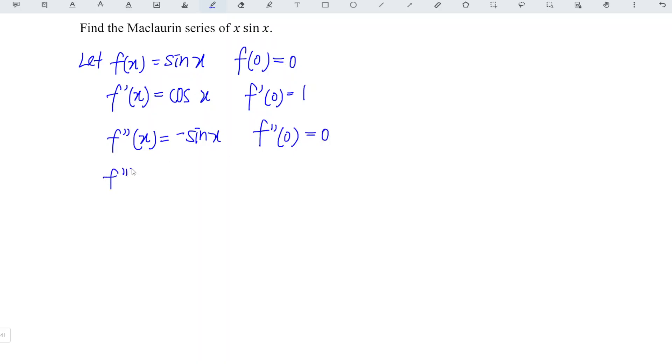Differentiate sine is cos, which means that we have negative cos for this case. At x equal to 0, we have negative 1.